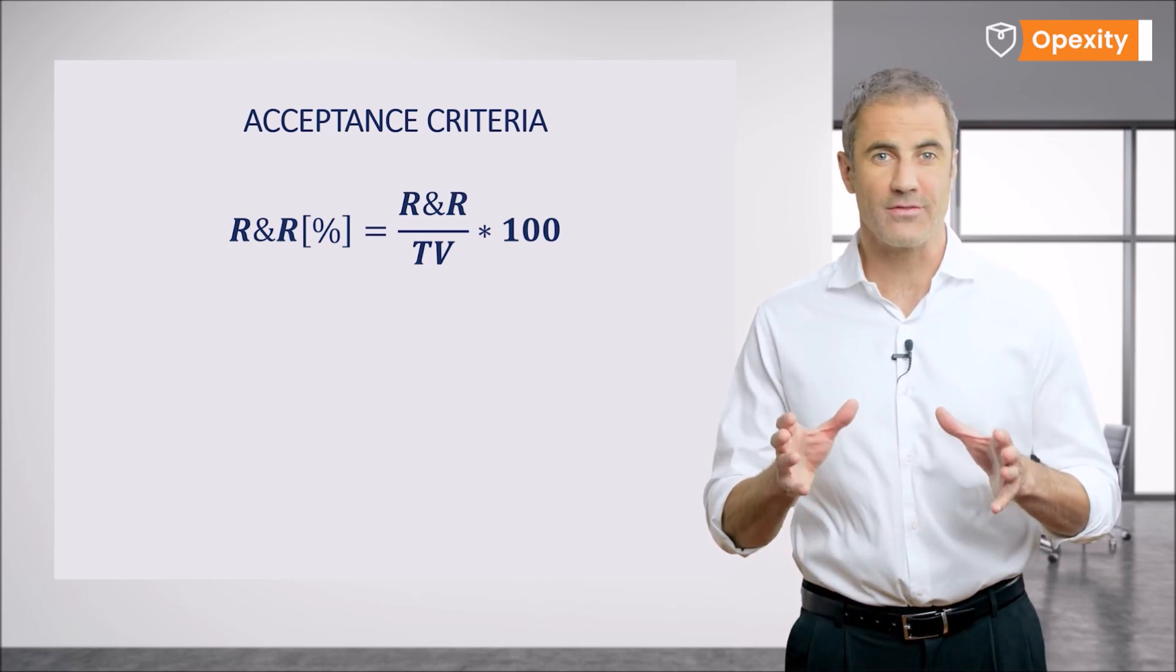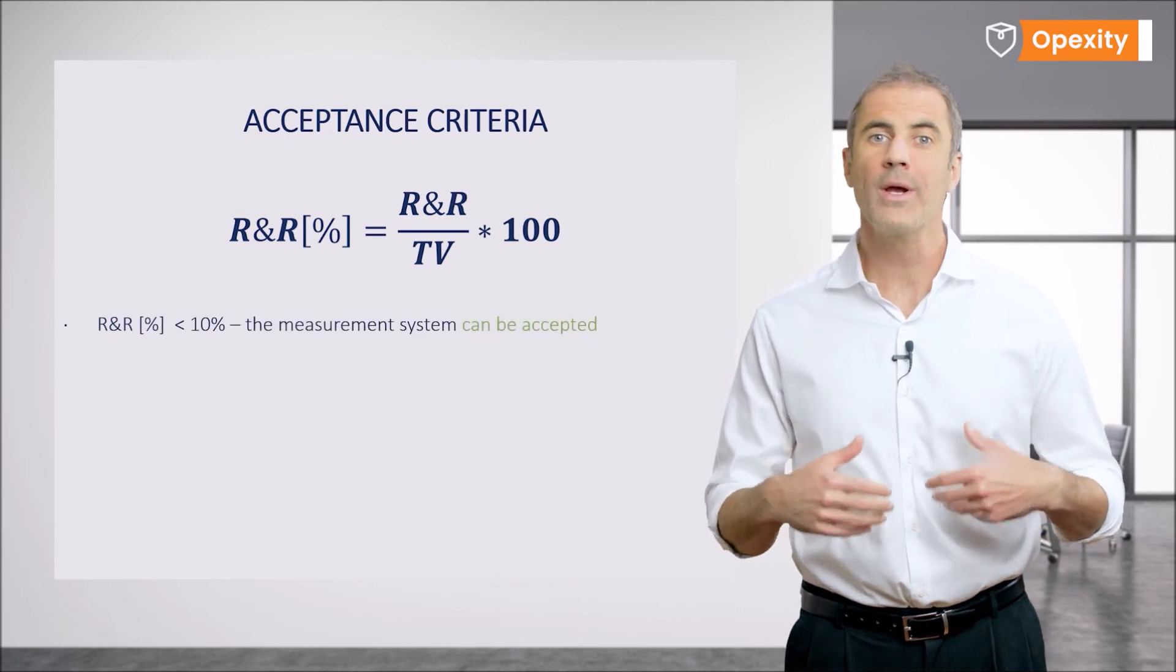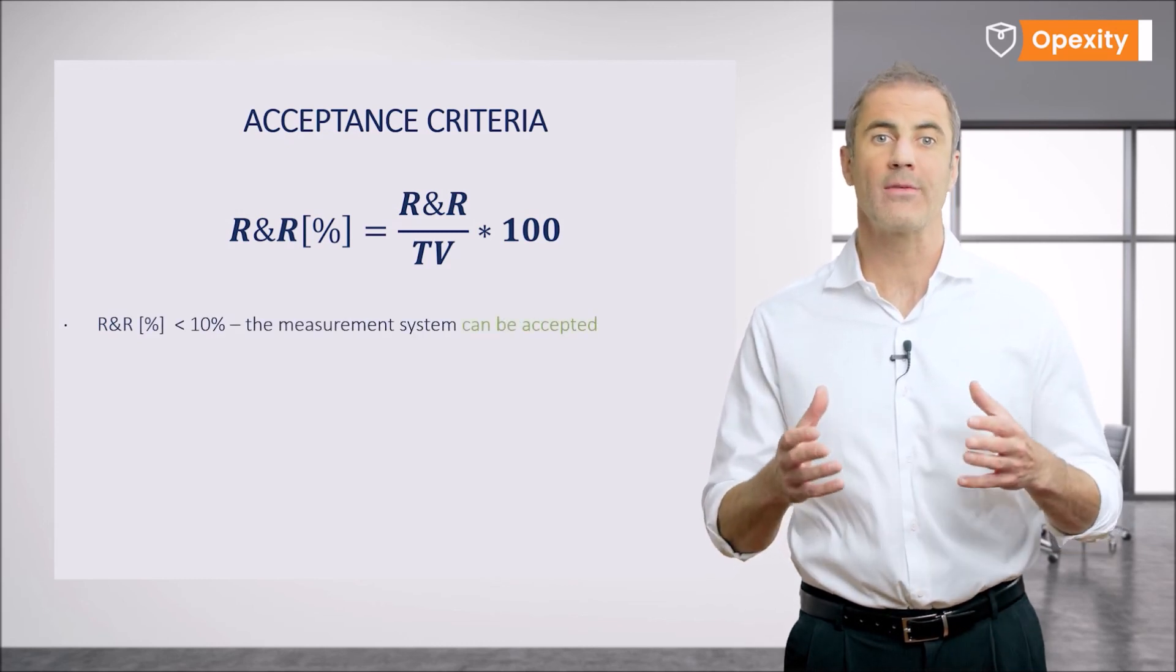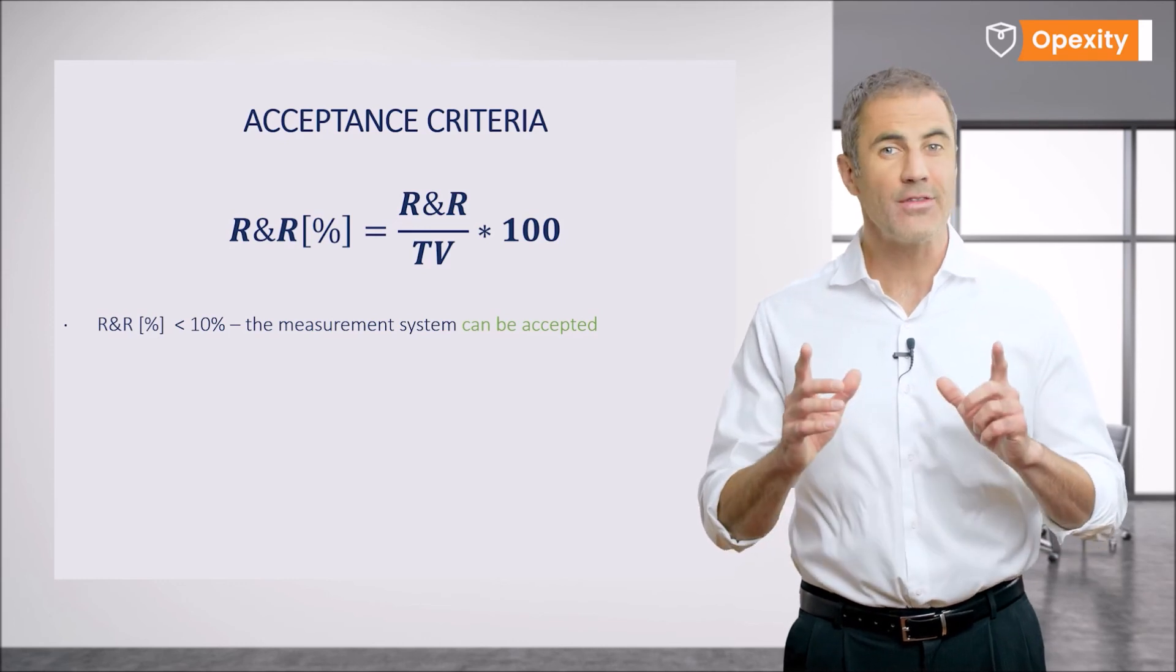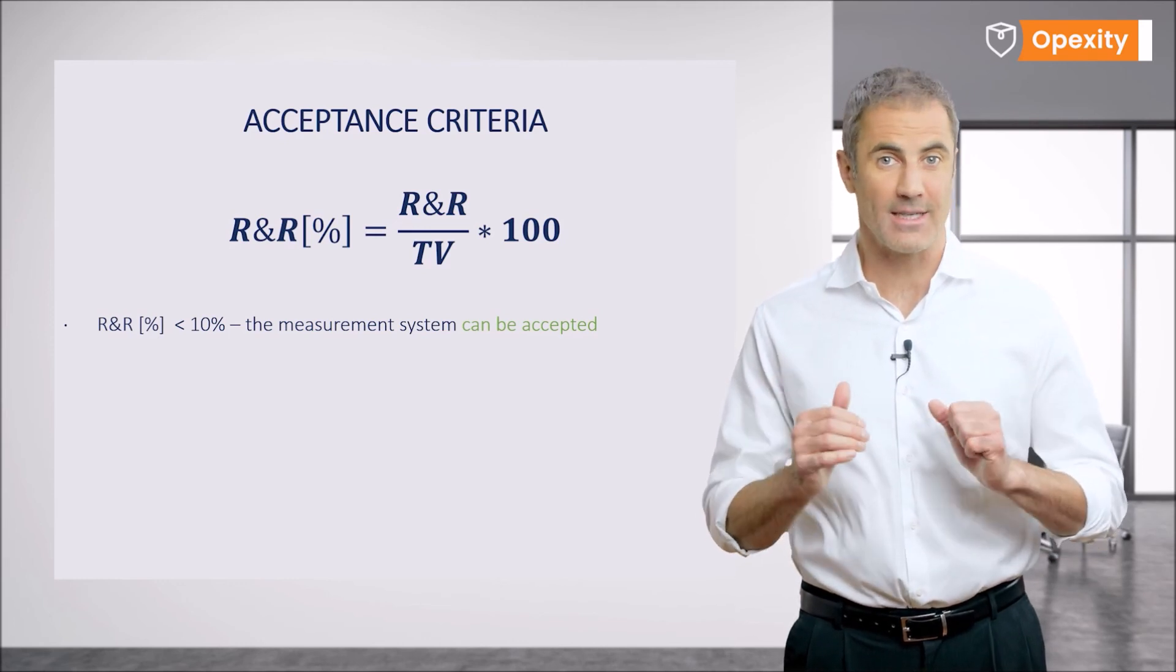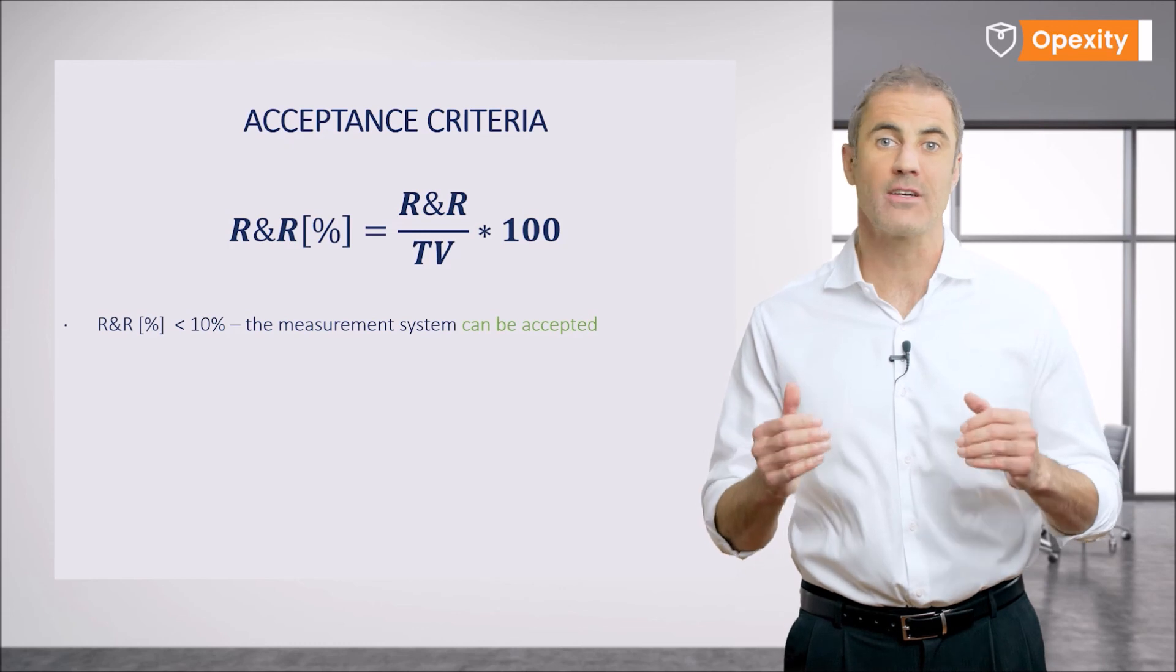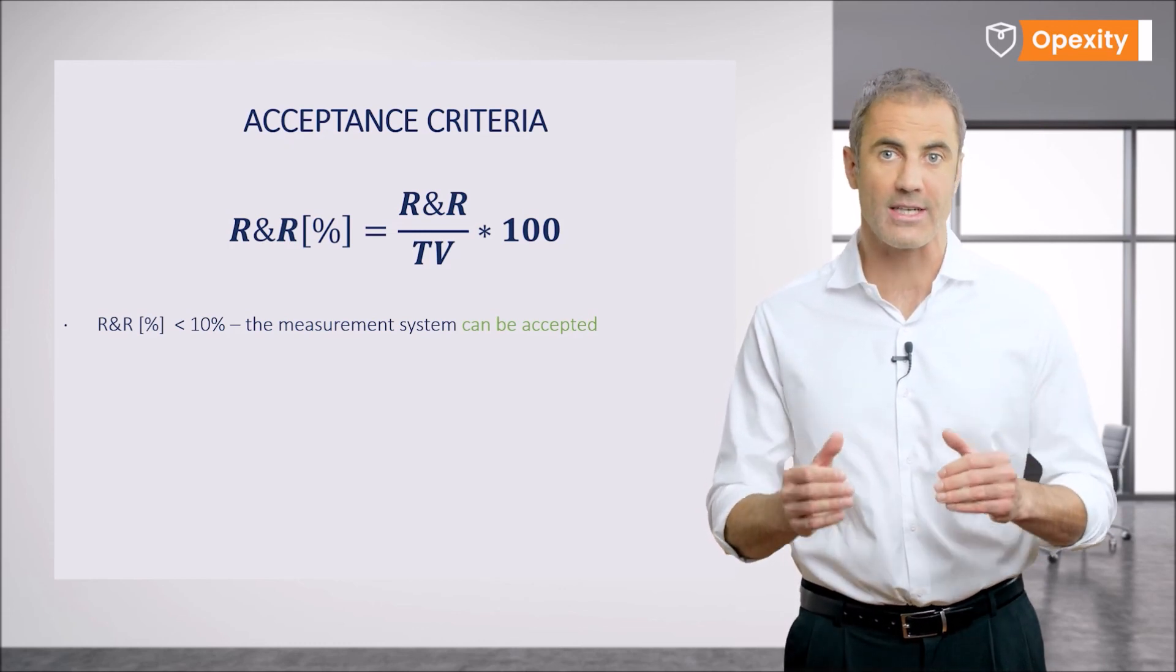If the R&R percentage value is less than 10%, we can accept such a measurement system without any additional comments or conditions. If the R&R percentage value is less than 10%, then the system is better for measuring a given characteristic of a product.